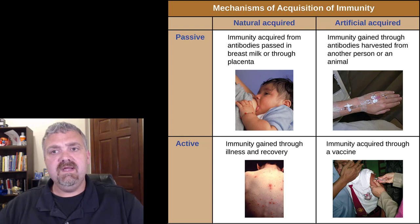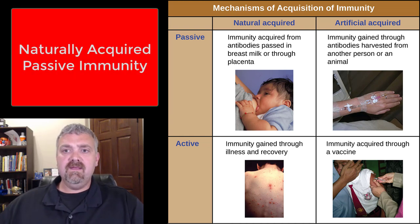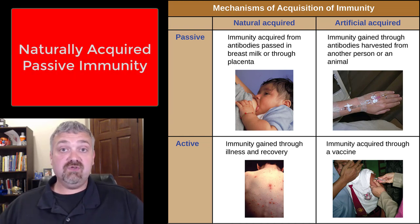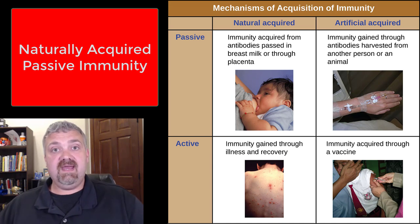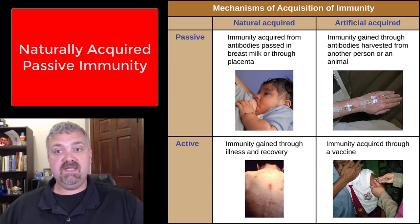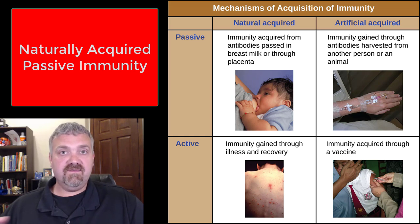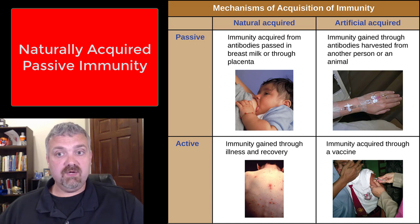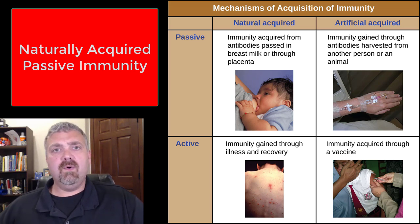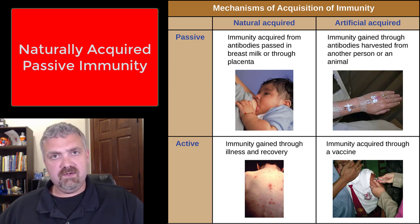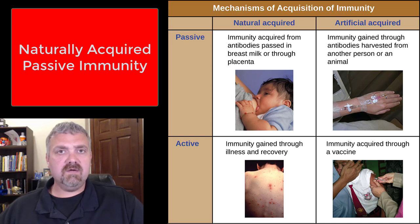We'll go in order. First, naturally acquired passive immunity. This is when, in a natural fashion, you are given antibodies from another source. Your two options are breast milk or through the placenta. IgG antibodies are the only antibodies of the five classes that cross through the placenta, and you are given your mom's IgG antibodies while you're in the womb. All five classes of antibodies cross into breast milk, so a mother breastfeeding their child is an example of naturally acquired passive immunity.